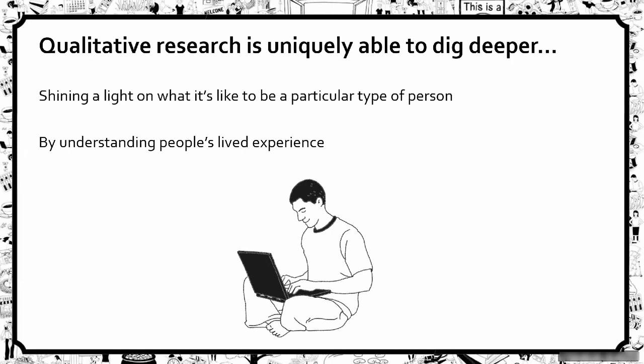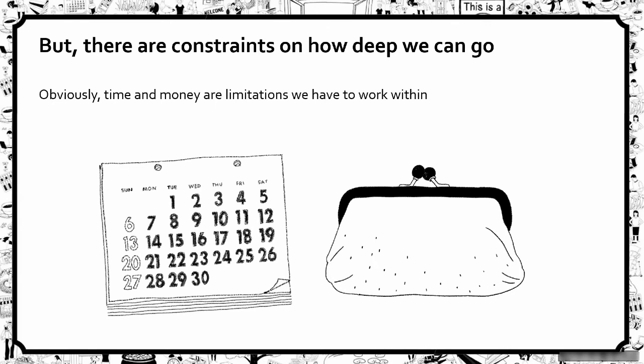The background is really what we love about doing qualitative research — as qualies, we're able to dig deeper and shine a light on what it's like to be a particular type of person. At Qual Street, it's about really understanding people's lived experience. But there are always constraints around time and money.